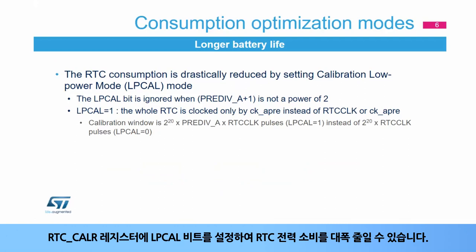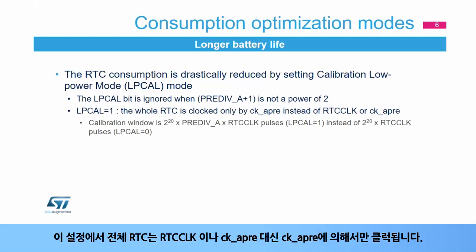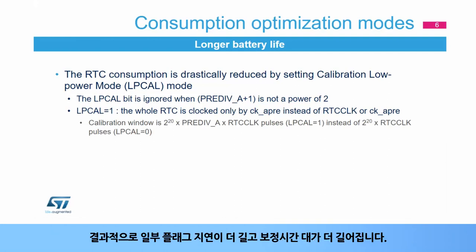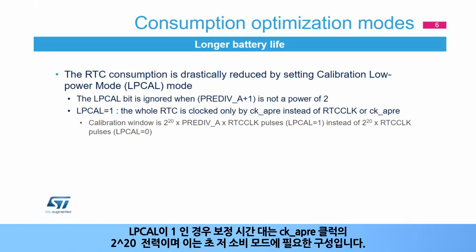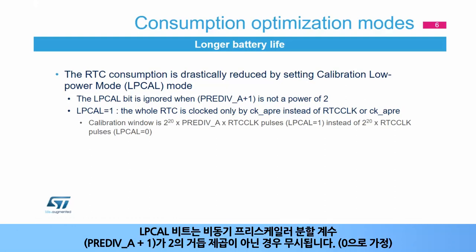It is possible to drastically reduce RTC power consumption by setting the LP-cal bit in the RTC-CAL-R register. In this configuration, the whole RTC is clocked only by CKA pre. Consequently, some flag delays are longer and the calibration window is longer. When LP-cal equals 0, the calibration window is 2 to the power of 20 RTC clocks. When LP-cal equals 1, the calibration window is 2 to the power of 20 CKA pre-clocks, which is required for ultra-low consumption mode. The LP-cal bit is ignored, assumed to be 0, when the asynchronous pre-scaler division factor pre-div A plus 1 is not a power of 2.